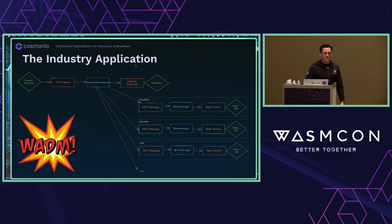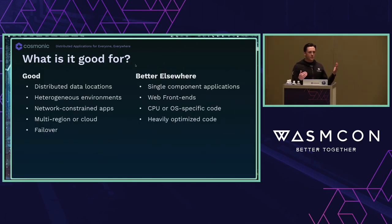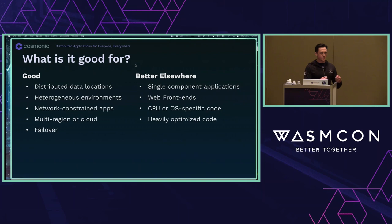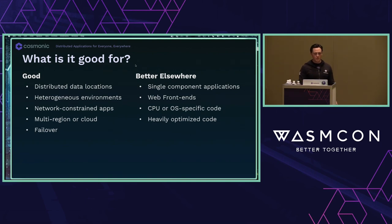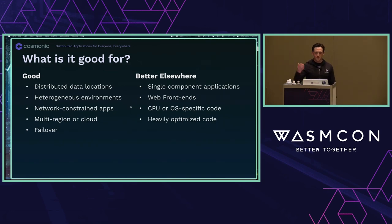This really enables a flexible deployment topology that you really could not do with containers and Kubernetes. What is all this good for, as a general category? This is really good for distributed data locations — pushing the application as close to the data as possible, where everything works locally in each individual branch without going to a central database. It's great for heterogeneous environments, network-constrained applications, going multi-region, multi-cloud, deploying to a variety of edges, and for failover — the ability to turn off Wi-Fi, keep processing, come back online, and it just works.